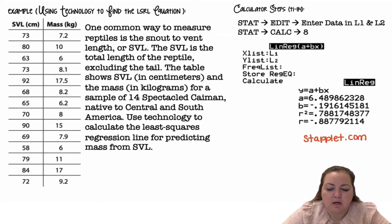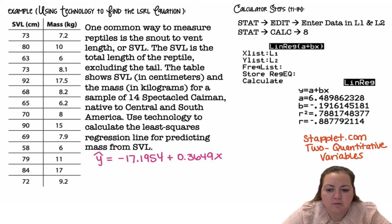All right, you can also go to staplet.com and go to two quantitative variables, and if we do this, we get y hat equals negative 17.1954 plus 0.3649x. So that was a and b, I plugged them into the equation. So that's not matching the calculator steps from your notes. This is if you plugged the SVL data into list one and the mass data into list two. This would be your equation.